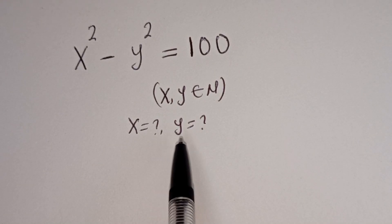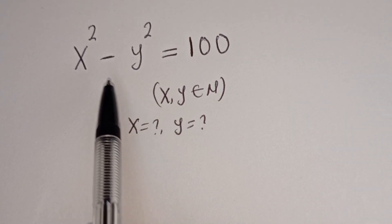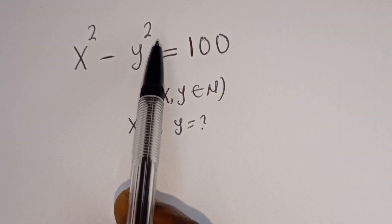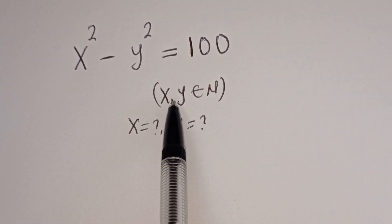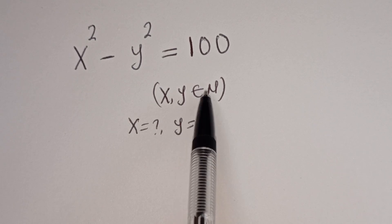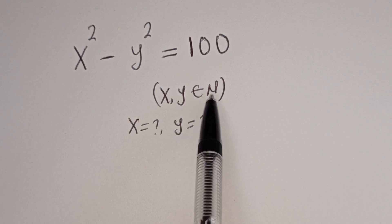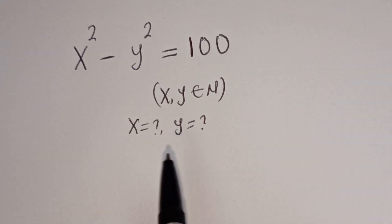Hello. How to solve for X and Y in this equation: X squared minus Y squared is equal to 100, where X and Y are members of the natural numbers.